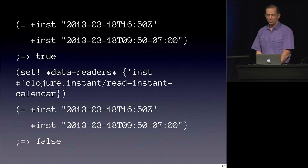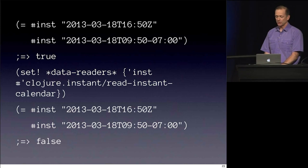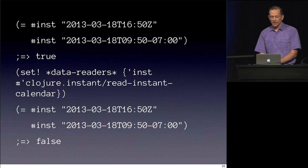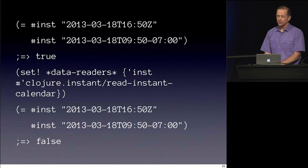Looking at how `inst` works: those first two expressions are the same instant in time because we take the offset and subtract it, adding hours back. But if we're using `Calendar` as the concrete type, Calendar remembers the offset. So two instants representing the same moment won't compare equal unless the offsets are exactly the same. Be careful about that when using Calendar.